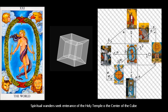Spiritual wanderers seek entrance into the holy temple in the center of the cube. That is basically where people want to get their full awakening. To get to that center you have to be initiated first from that center, and then you have to basically explore all parts of the cube through understanding the faces, which is associated with the seven double letters. But then you also have to understand the edges of the cube, which I will go into a little bit more.